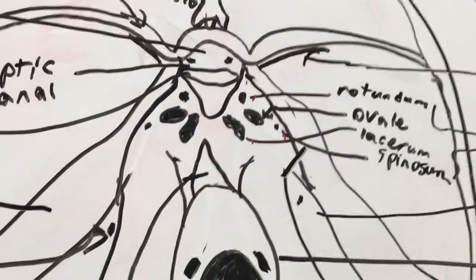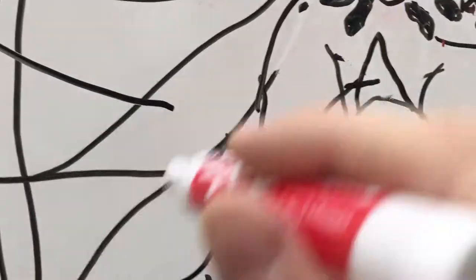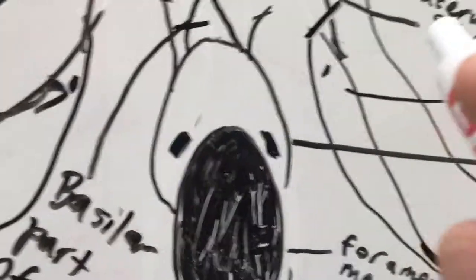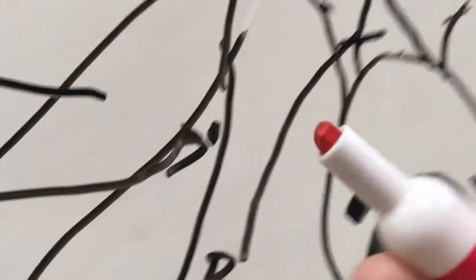So that's there and then here we have a groove. If this was a 3D model, you would see it much better. It's a groove for the petrosal sinus. And then you also have the petrosal part of the temporal. And that is where you will find the internal acoustic meatus. I made it visible because it's really hard to see. It's kind of like inside.